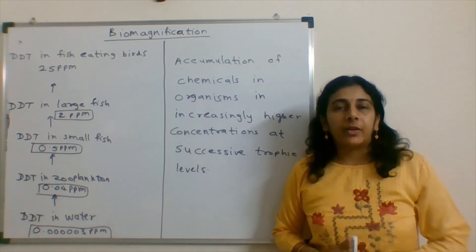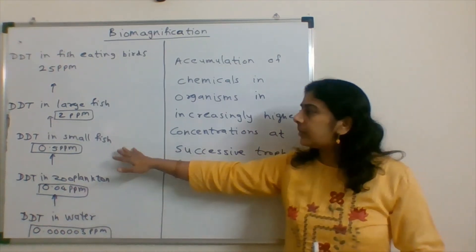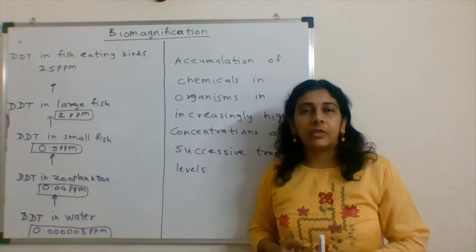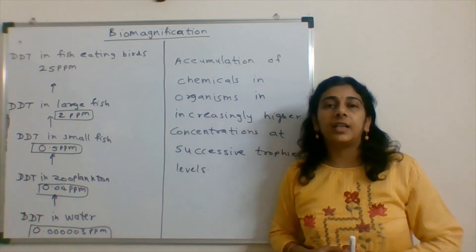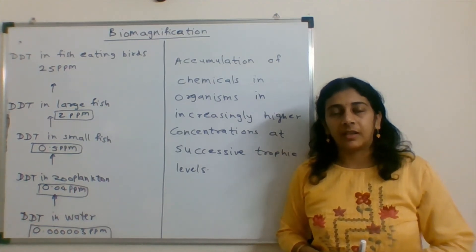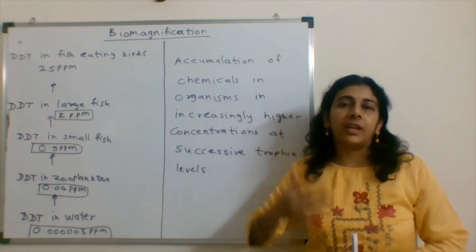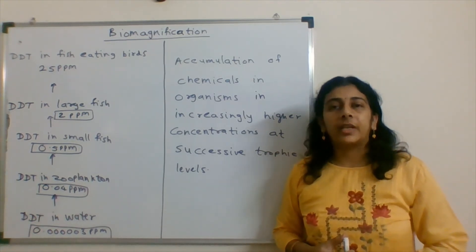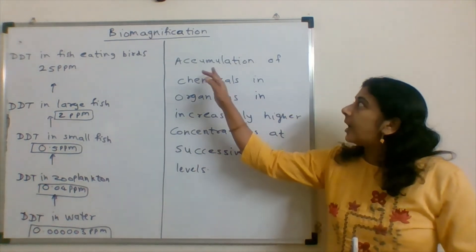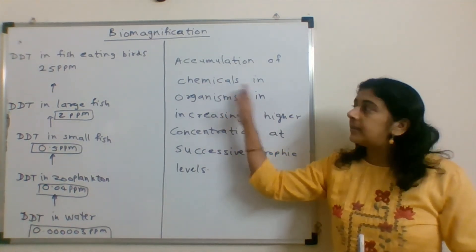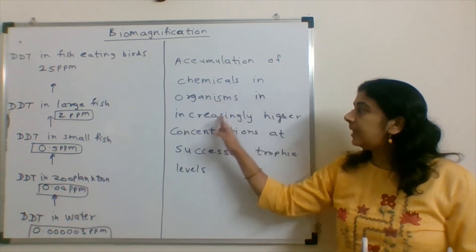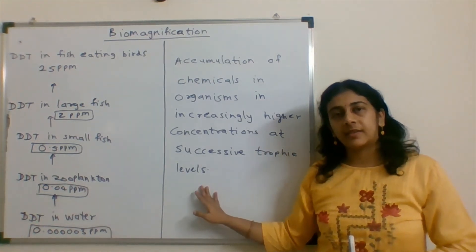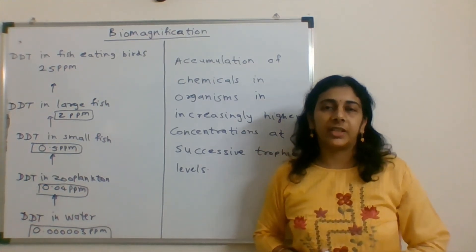This process is known as biomagnification. Biomagnification is the accumulation of chemicals in organisms in increasingly higher concentrations at successive trophic levels. This is called biomagnification. So the top level, the top trophic level, has the highest effect.